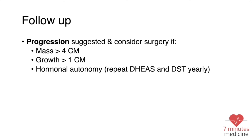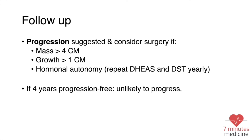The other question is follow-up. Surgery is indicated in three main cases: first, if the mass is more than four centimeters after ruling out pheochromocytoma; second, if there is significant growth; third, if there is hormonal autonomy indicating the mass is functioning. If there is no progression in the mass after four years of follow-up, it is less likely to progress and we might stop surveillance after discussion of risks and benefits with the patient.